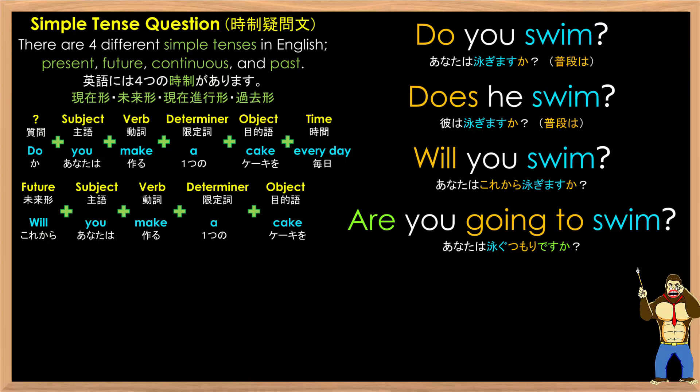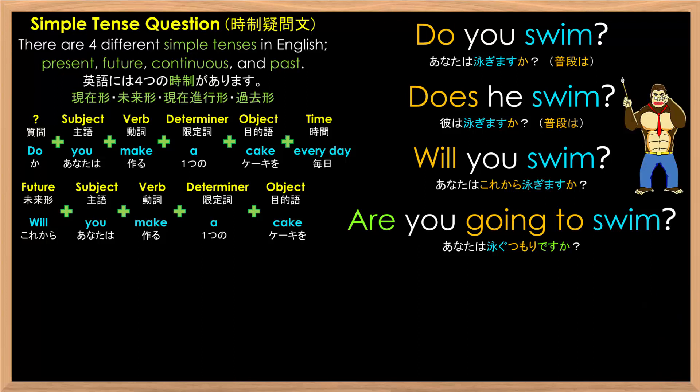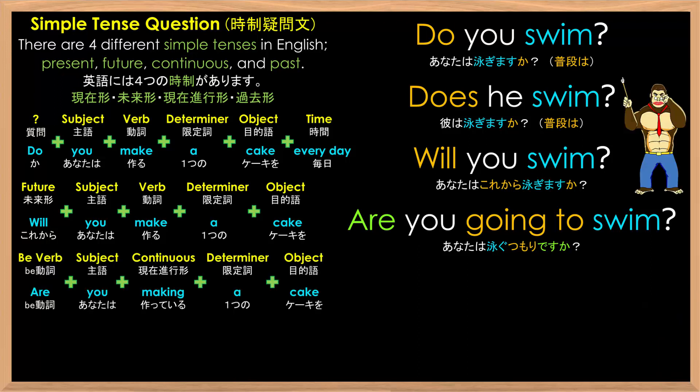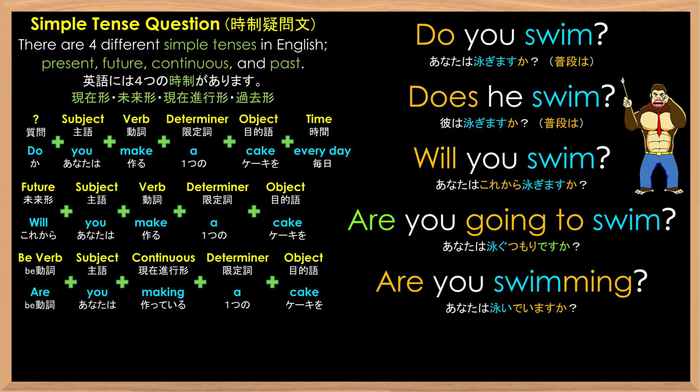Next, we have continuous question, where you put the be verb at the start of the question, as in: Are you making a cake? Another example is: Are you swimming? And depending on the subject, you change the be verb to match that subject.